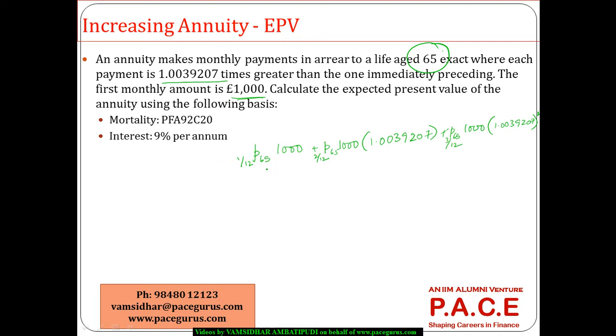V is 9%. So this has to be discounted by 1 by 1.09 to the power 1 by 12. And this has to be 1.09 to the power 2 by 12, and so on. This is the summation that I am typically looking at. Probably a better way for me to write is 1000 I will take out, and I will also take out 1 by 1.0039207.